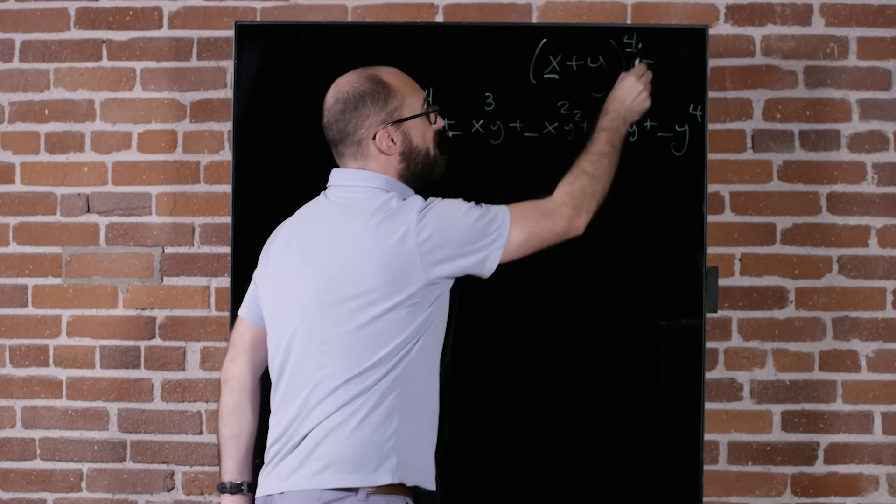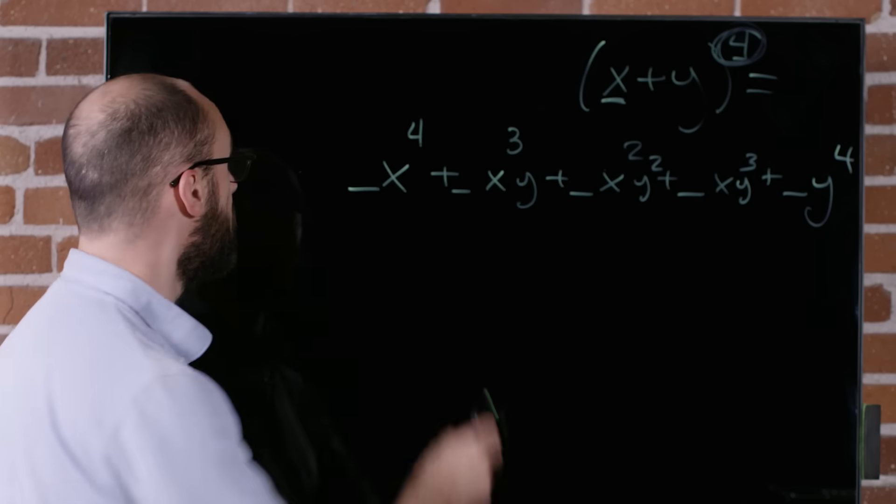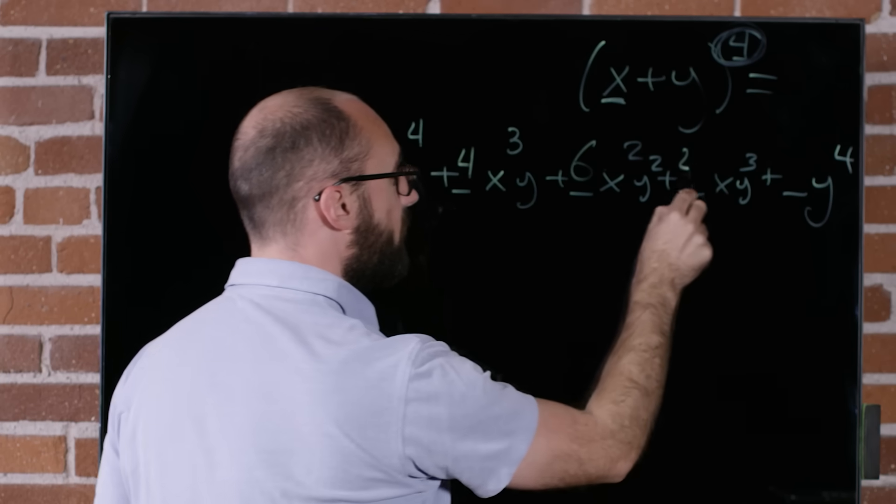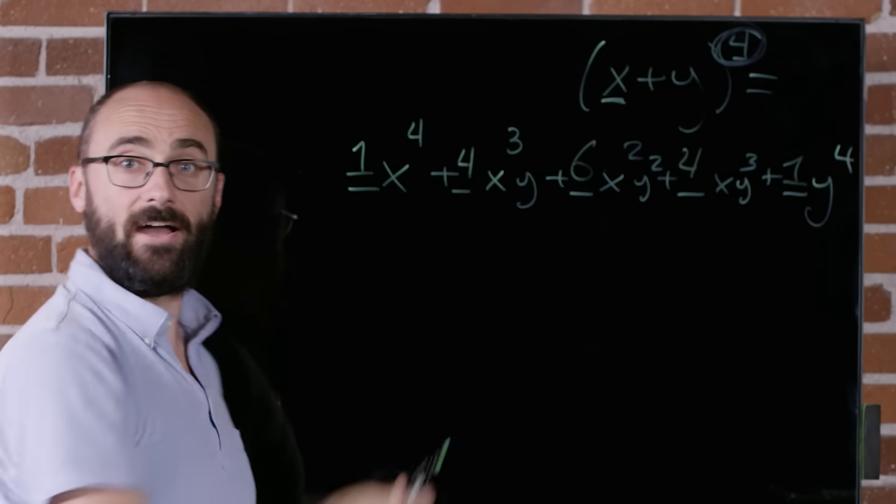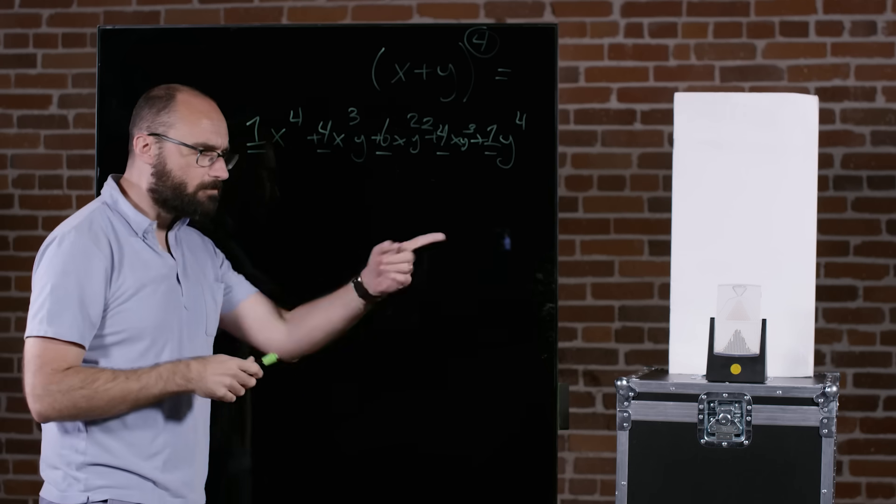Let's look at the fourth row on Pascal's triangle. 1, 4, 6, 4, 1. So, all we need to do is put in 1, 4, 6, 4, 1. Ta-da! We're done. Thank you, Pascal's triangle. And thank you, Galton Board, for showing me all of these neat things and more.